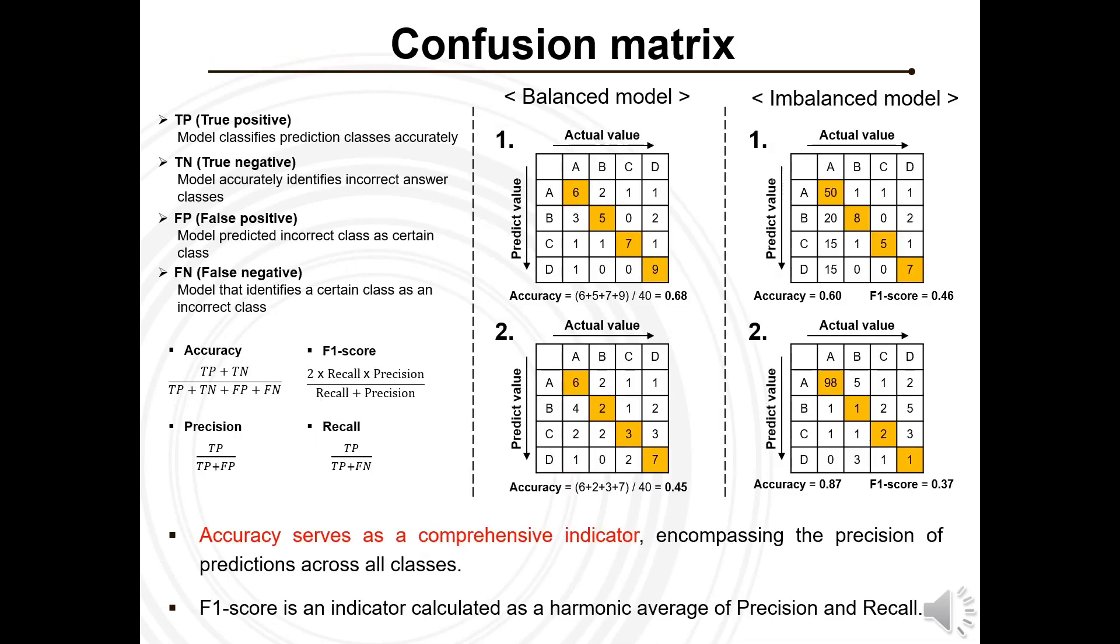In order to evaluate the performance of the learned model, we compare its accuracy and F1 score with the confusion matrix algorithm, considering the data's uniformity.